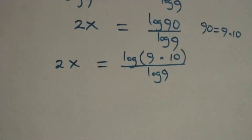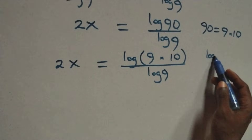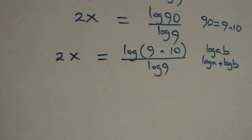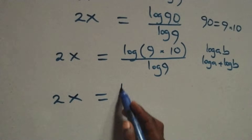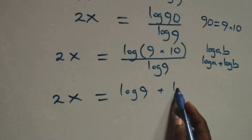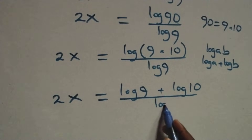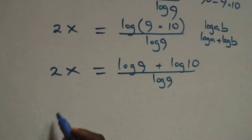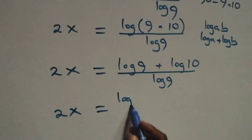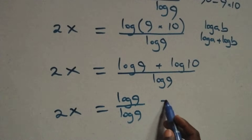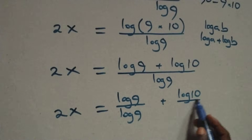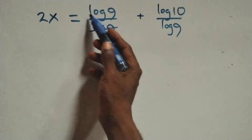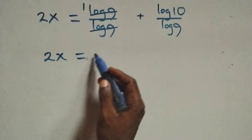We apply the logarithm product rule: log of a times b is the same as log a plus log b. So this becomes 2x equals log 9 plus log 10, all over log 9. We separate this into two fractions: 2x equals log 9 over log 9 plus log 10 over log 9. The log 9 terms cancel, giving 2x equals 1 plus log 10 over log 9.